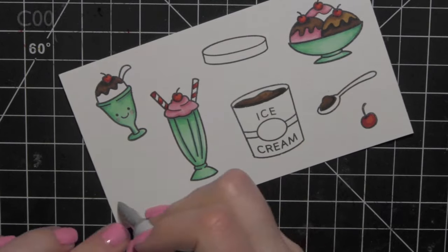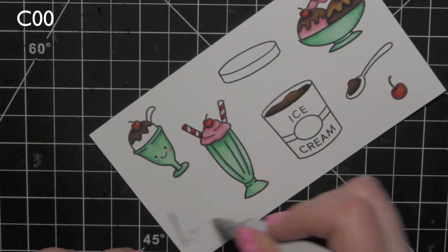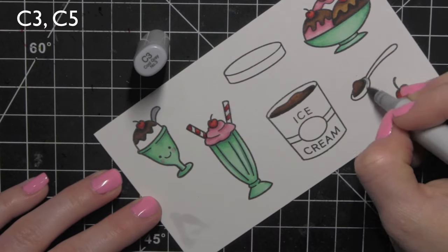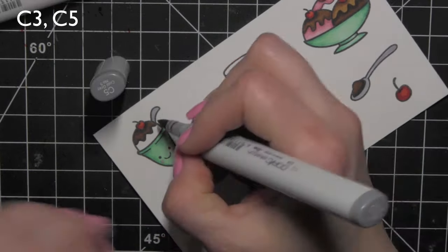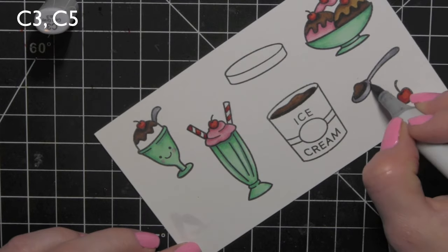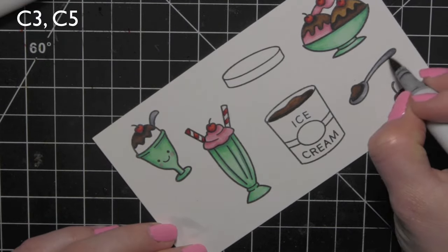For the white on the straw I'm going to use a little C00 and then I'll use C3 and C5 to create the silverware coming out of the ice cream dish and then the other on the individual spoon.